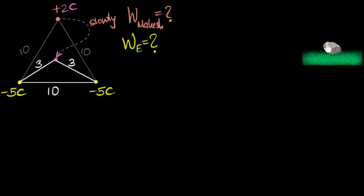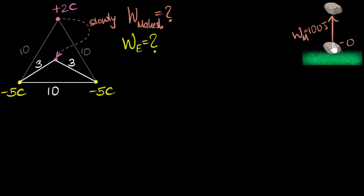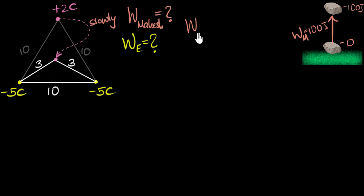Imagine I have a stone lying on the ground. What happens when I, Mahesh, move it up? Let's say I did 100 joules of work in pushing it up — I do positive work. What happens to the potential energy? Well, if the initial potential energy was zero, when I do work I add potential energy into this rock, and so the potential energy of the rock increases by 100 joules. Therefore, work done by me — the external force — equals the final potential energy minus the initial potential energy.